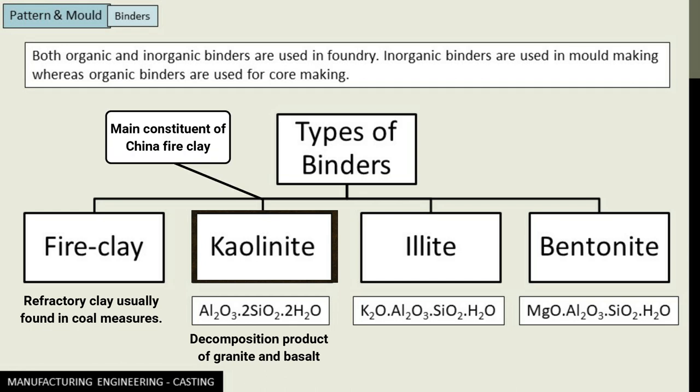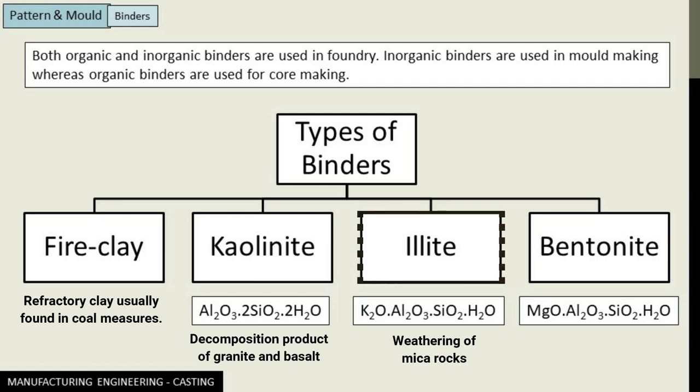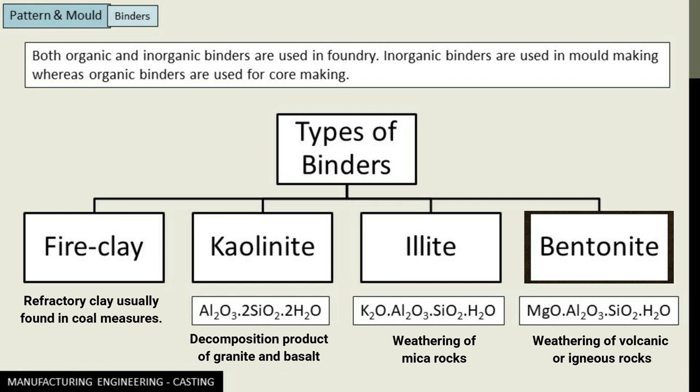Kaolinite is the main constituent of china clay and fire clay. Illite has the composition K₂O·Al₂O₃·SiO₂·H₂O; it is also formed by the weathering process but of mica rocks. Its particle size is about the same as kaolinite and has similar molding properties. Bentonite has the composition MgO·Al₂O₃·SiO₂·H₂O; it is formed from the weathering of volcanic rocks and is actually a creamy white powder.